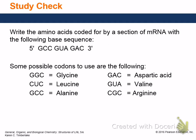Practice: given the mRNA sequence GCC, GUA, GAC — what amino acid sequence do you get? The first codon GCC codes for alanine (Ala). The second codon GUA codes for valine (Val). The last codon GAC codes for aspartate (Asp).